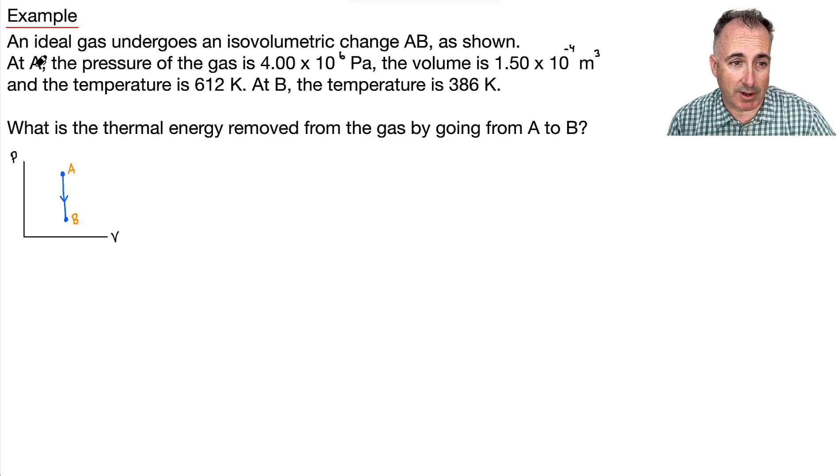And they tell us, at A, the pressure of the gas is 4.00 × 10^5 Pa, the volume is 1.50 × 10^-3 m^3, and the temperature is 612 K. At B, we're only told the temperature is 386 K. And the question is, what is the thermal energy removed by going from A to B?